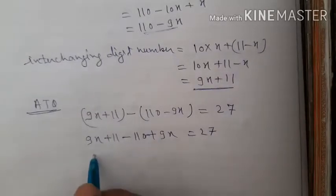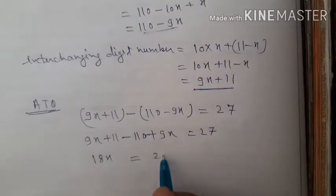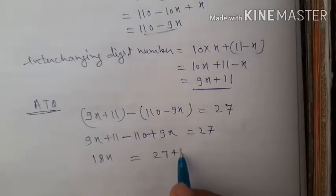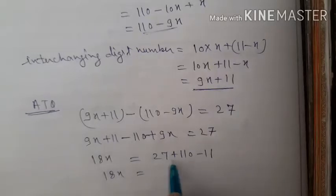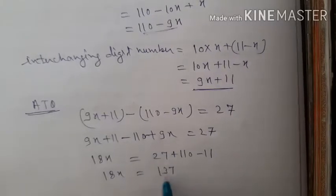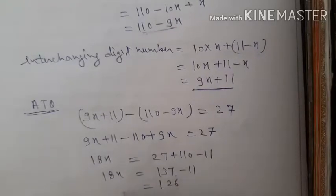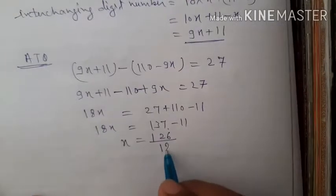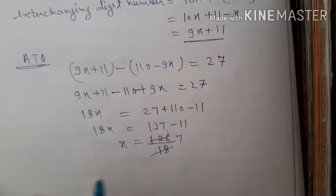So 9x plus 9x gives 18x. Bringing constants to the other side: 18x equals 27 plus 110 minus 11, which is 18x equals 126. Therefore x equals 126 by 18, so x equals 7.